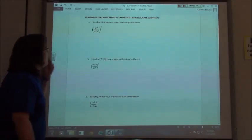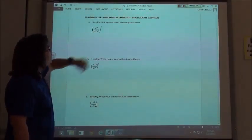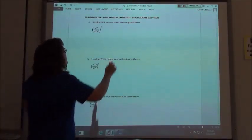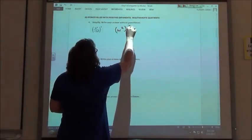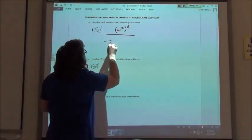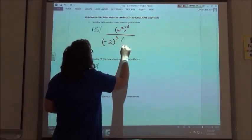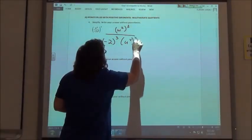If I do my power rule, basically I have to raise everything to the third power. So I'm taking w squared to the third power, negative 2 to the third power, and u to the fourth to the third power.